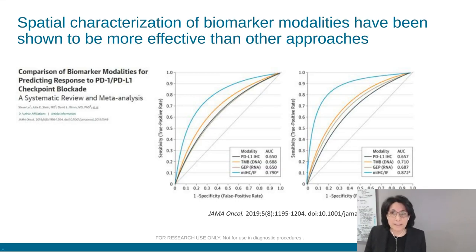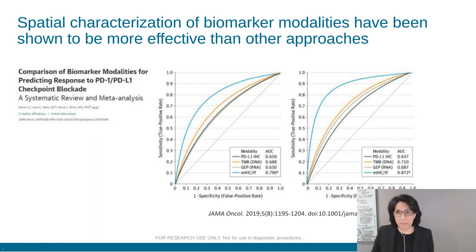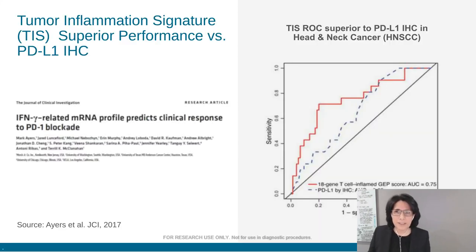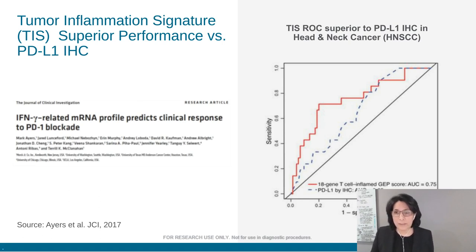The spatial characterization of biomarker modalities has been shown to be more effective. Data published in one study demonstrated that high-plex spatial data are better or more effective approaches for predicting response to checkpoint blockade. The ROC plot shown here demonstrates that multiplex immunohistochemistry is superior relative to other biomarkers, which included single-plex immunohistochemistry, TMB, and gene signatures.